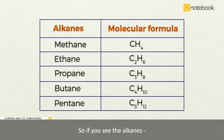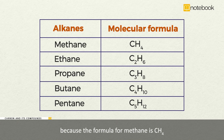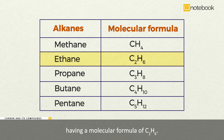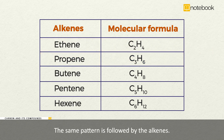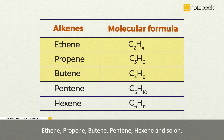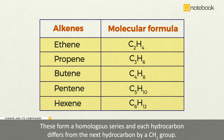If you see the alkanes, these form a homologous series because the formula for methane is CH4 and that of its next compound in the table is ethane, having a molecular formula of C2H6. So these two compounds differ by a CH2 group. The same pattern is followed by ethene, propene, butene, pentene, hexene, and so on. These form a homologous series and each hydrocarbon differs from the next hydrocarbon by a CH2 group.